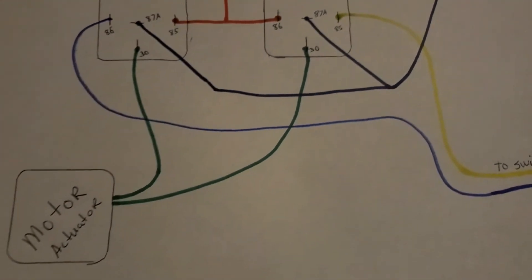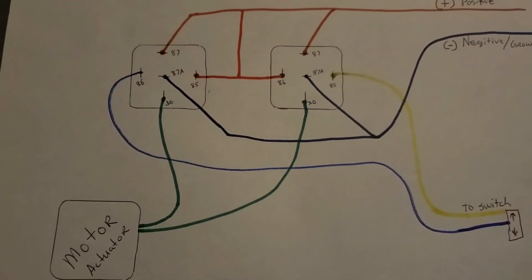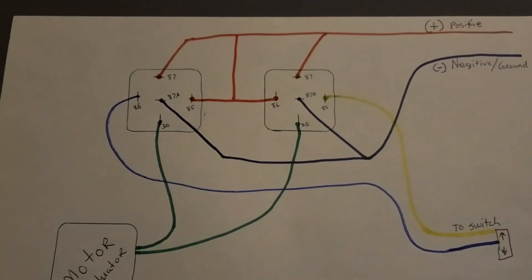Pin 30 is out to your motor, and you can see opposite sides of the relay go to your switch.